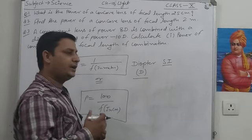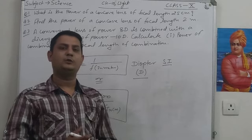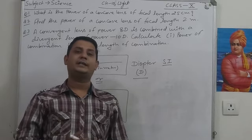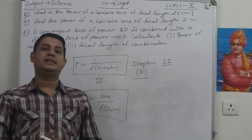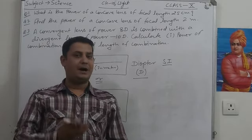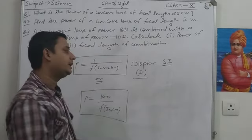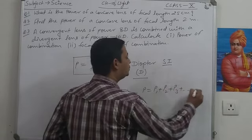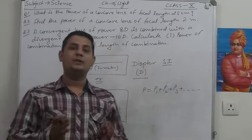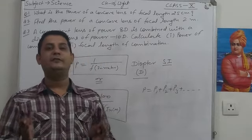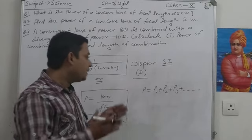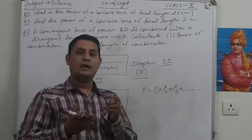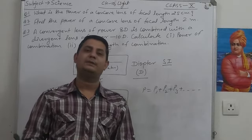In the previous class we also studied formulas related to the combination of power of the lens. If there are more than one lens connected to each other, we say the lenses are in combination. In that case, the resultant power formula will be P is equal to P1 plus P2 plus P3 and so on — we add the powers of all lenses algebraically.